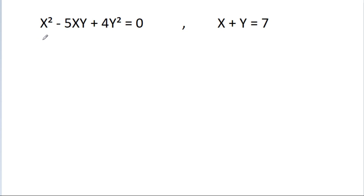In this video, we have given that x squared minus 5xy minus 4y squared is equal to 0, and x plus y is equal to 7. Then we have to find the value of x and y.